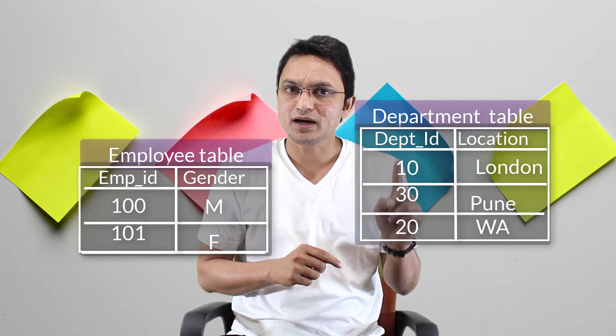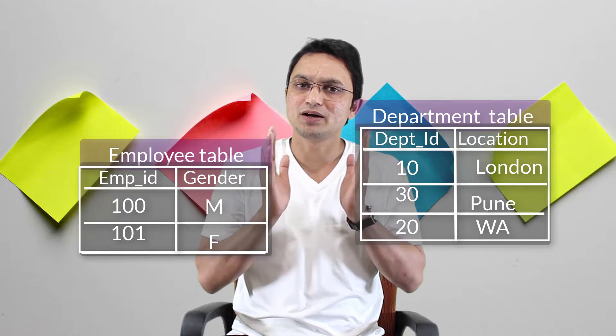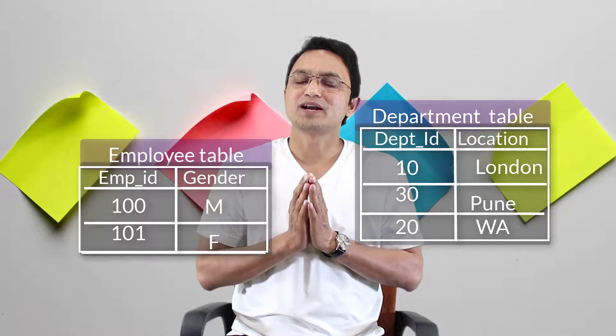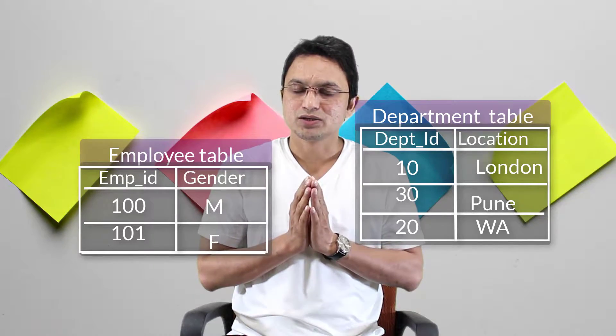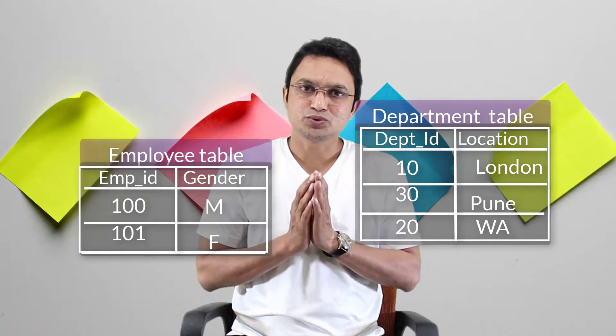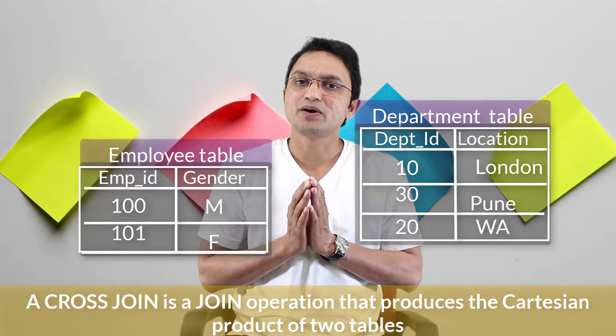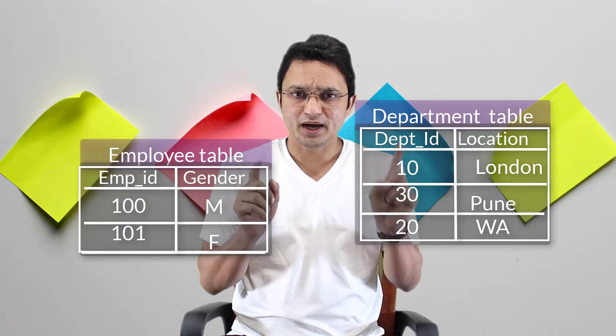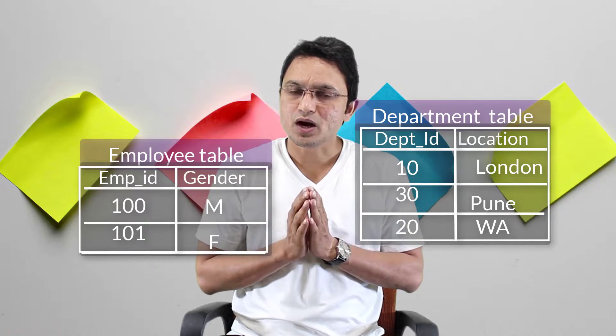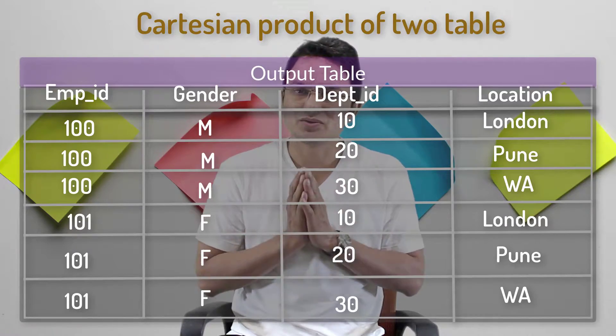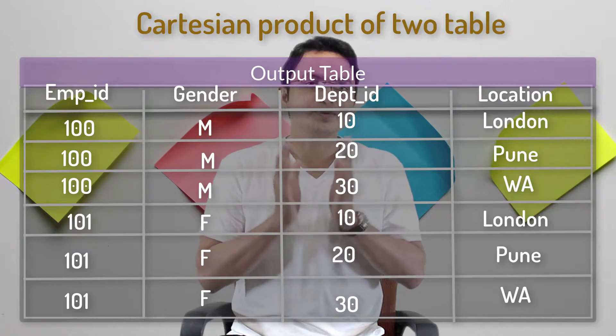In order to explain the cross join, I need to take help of two tables: the employee table and the department table. The join is used to combine two tables. If you join the employee table and the department table using cross join, you can see the output on your screen. Now you might question how exactly this came about.